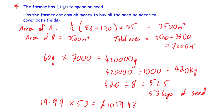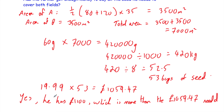The farmer has £1,100 to spend on seed, and the total cost is £1,059.47, so he actually has enough money. Yes, he's got £1,100, which is more than the £1,059.47 needed.